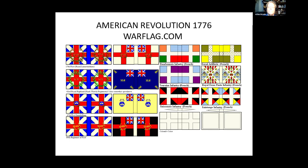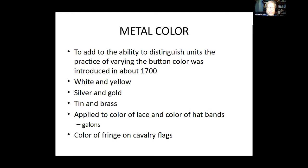There's a peculiarity of the period called the metal color. To add to the ability to distinguish units, they varied the button colors — white and yellow buttons, silver and gold buttons, or tin and brass buttons. These applied to the color of the lace on the uniforms, the hat bands, the writing on the infantry flag, and the color of the fringe. So you could have units with silver fringes and units with gold fringes, depending upon other things.